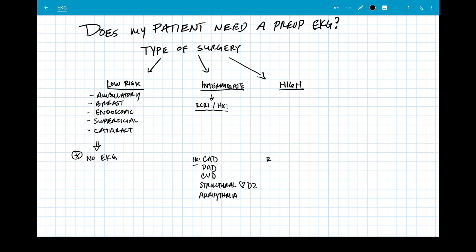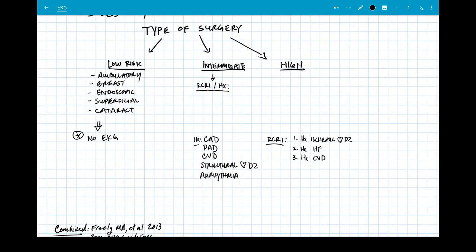The revised cardiac risk index we talked about in our pre-op cardiac clearance lecture. The first three things have to do with the patient's history: history of ischemic heart disease, history of heart failure, history of cerebral vascular disease.